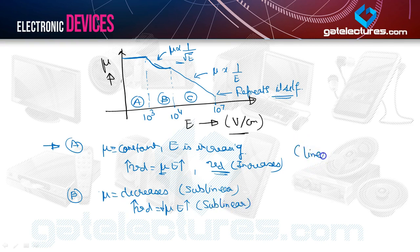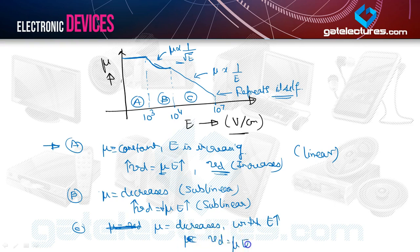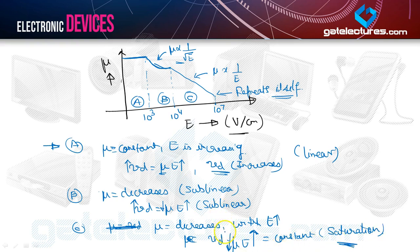In region C, at very high electric fields, mobility decreases at the same rate as field increases, so V_D = μE remains constant — this is the saturation region. To summarize: region A is a linear region, region B is a sublinear region, and region C is a saturation region.